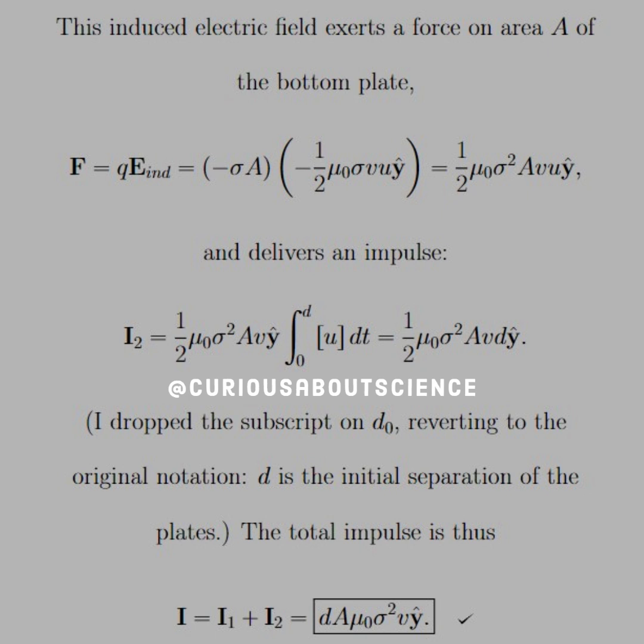And so the induced electric field exerts a force on area A of the bottom plate. F equals q E-induced. If we plug in everything there, remember bottom plate was negative, so that's why we get negative sigma A. And then the induced field for below was negative. So the two negatives cancel, and we get a sigma squared A, again in the y-direction. And this delivers an impulse of I2. So I2, again, take the integral, and we see that it plugs on through. u goes away, and we see that we get a d out of that. So I dropped the subscript on d0, reverting to the original notation: d is the initial separation of the plates.